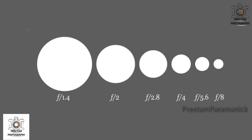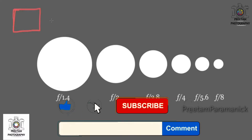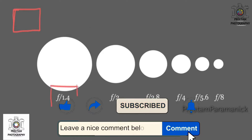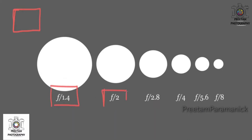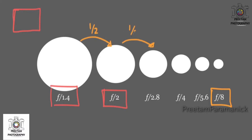The best way to think about your aperture is to imagine it as a window into your camera — you have bigger windows and smaller windows. Bigger windows have smaller numbers like f1.4 or f2, and smaller windows have larger numbers like f8. Because of the way light travels through lenses, each step along the scale allows half as much light into the camera, so you need twice as much time to expose — meaning longer shutter speeds.